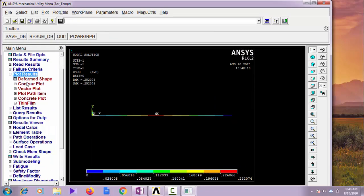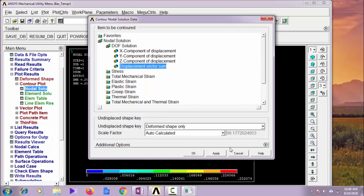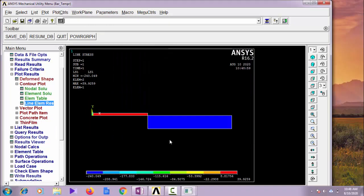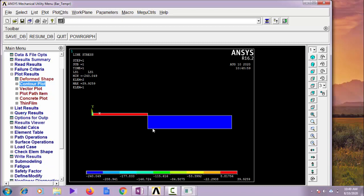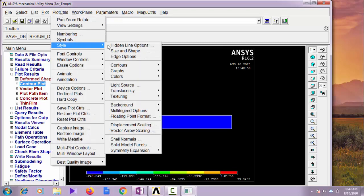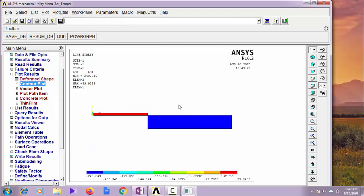Let us add the stresses. Define table, add LS1 is for stress, line element result LS1. See, 39.9 is maximum tensile and -240 is maximum compressive, that is in element 2, blue color and red color. Can you able to see? That is in theory. Let me change the background color.